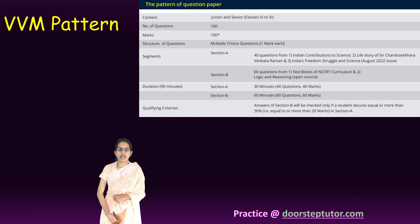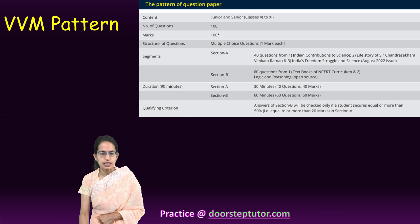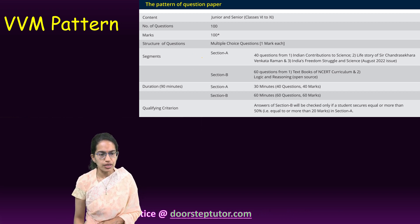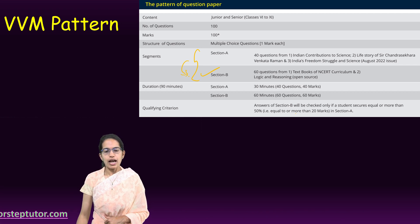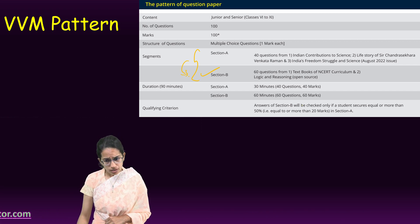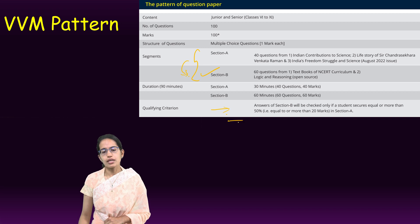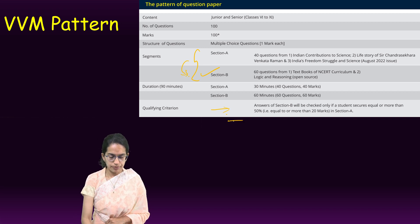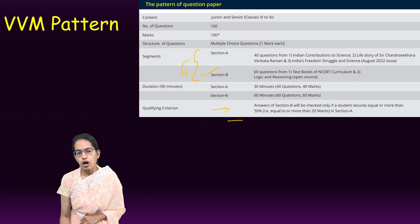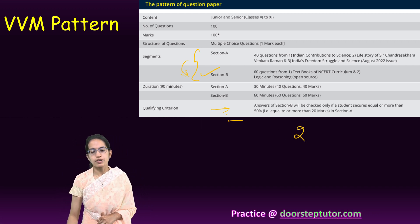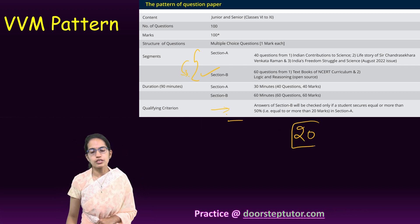The pattern of the examination includes Section A and Section B. Only those who qualify Section A will have Section B checked. The final criteria will be based on the complete marks of the students.